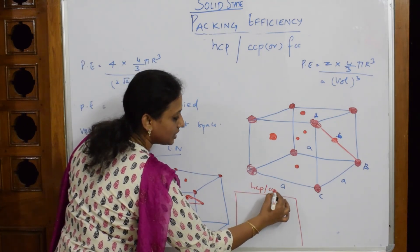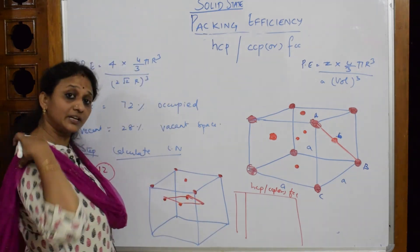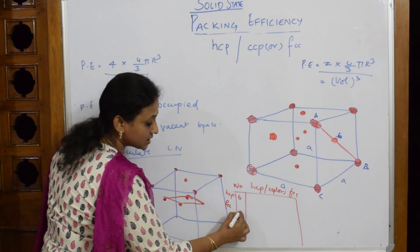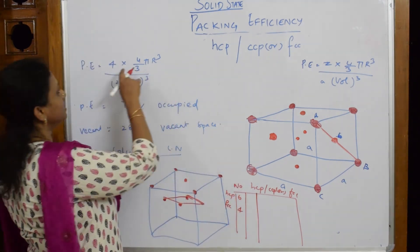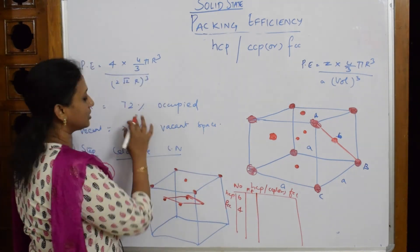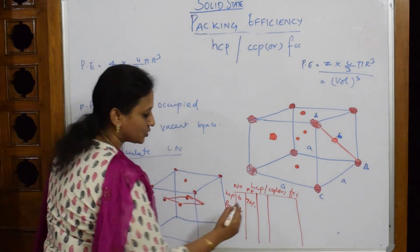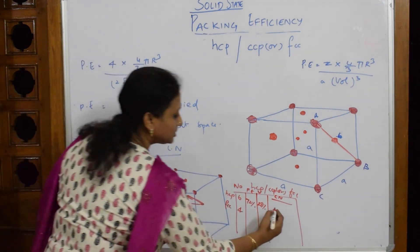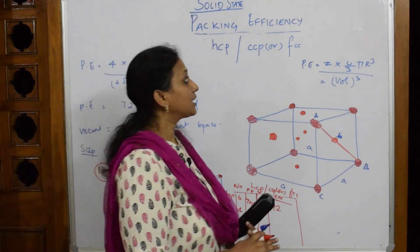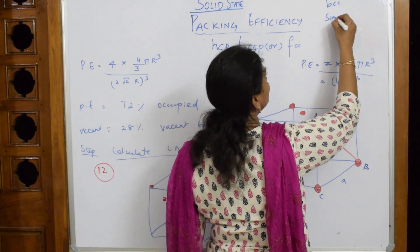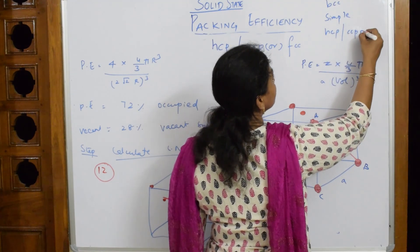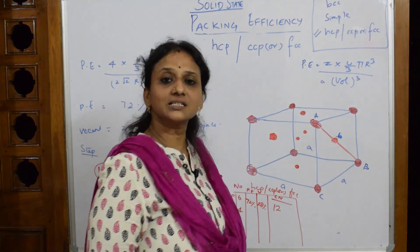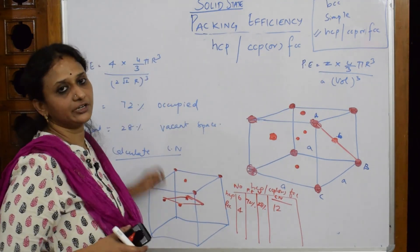To summarize for HCP/CCP/FCC: HCP has 6 atoms, FCC has 4 atoms. Packing efficiency is 74 percent, vacant space is 28 percent, and coordination number is 12. Compared to BCC, simple cube, HCP, CCP, or FCC, the maximum packing efficiency is observed in HCP and FCC — 74 percent. Thank you for watching.